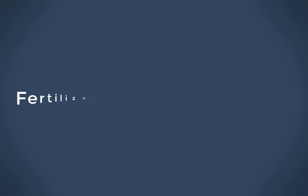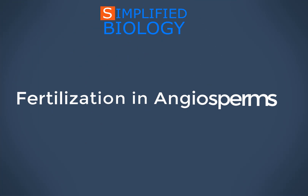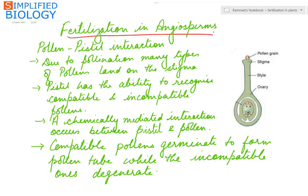Hello friends, welcome to Simplified Biology. Today's topic is Fertilization in Angiosperms. After pollination, when the pollens have reached the stigma, the next step is pollen-pistil interaction.